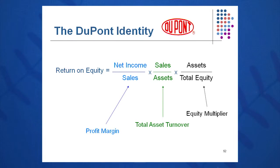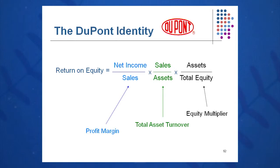They took net income divided by equity, multiplied by sales over sales and then assets over assets — in effect multiplying by one — and were able to break ROE into three different pieces: profit margin, which is net income over sales; asset turnover, which is sales over assets; and assets over equity, or the equity multiplier.